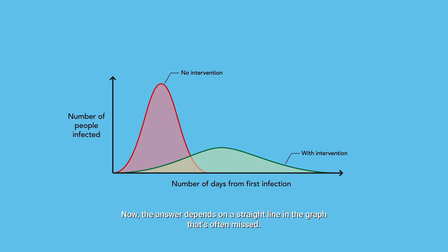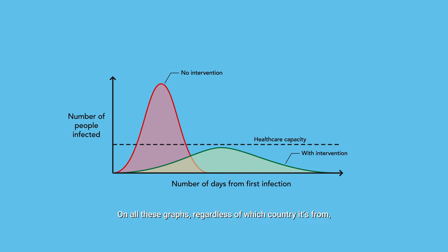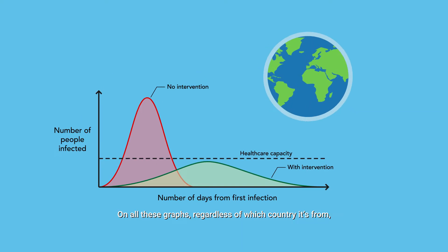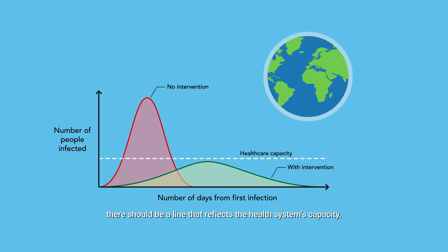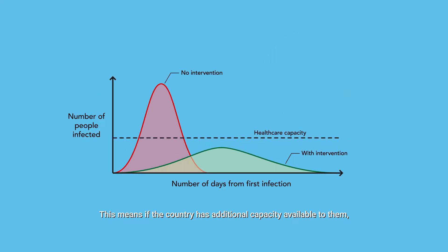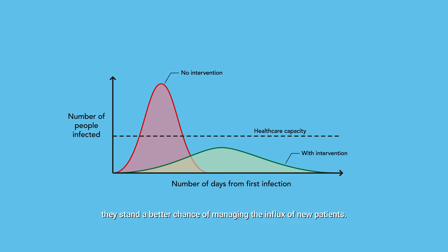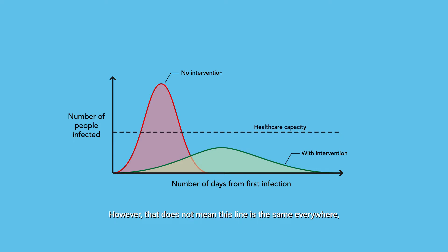The answer depends on a straight line in the graph that's often missed. On all these graphs, regardless of which country they're from, there should be a line that reflects the health system's capacity. This means if the country has additional capacity available to them, they stand a better chance of managing the influx of new patients. However, that does not mean this line is the same everywhere.